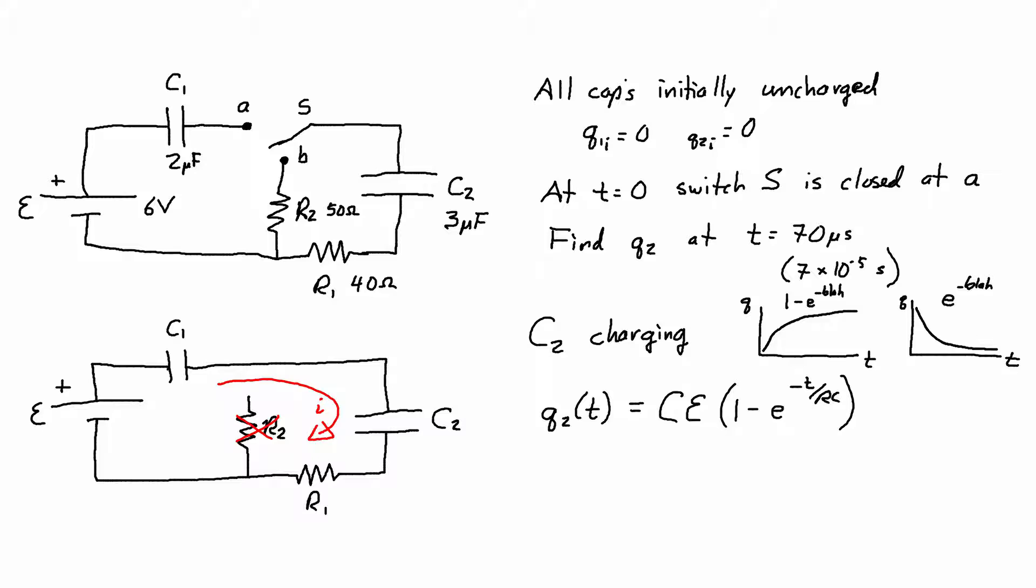The problem is that I have two different capacitors, C1 and C2. But this capacitor charging equation really is meant for a simpler circuit where you just have an EMF, a resistor, and a capacitor all in series.